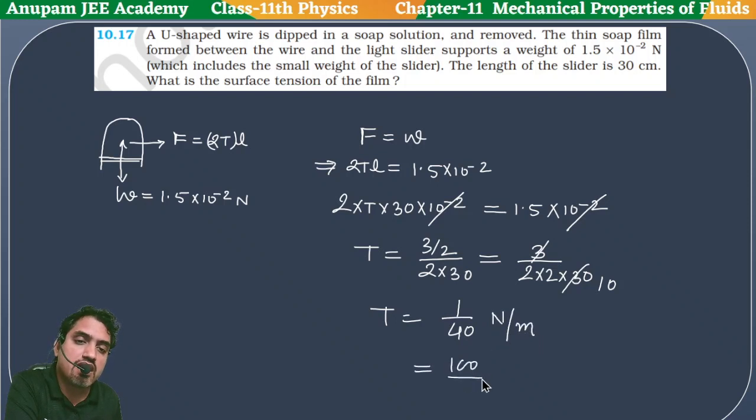The value of T we get is 1/40 newton per meter. We can write this as 100 divided by 40 × 10^-2 newton per meter, which becomes 2.5 × 10^-2 newton per meter.